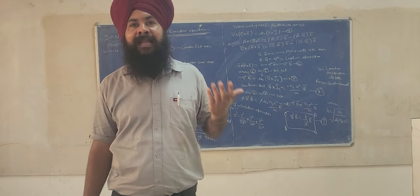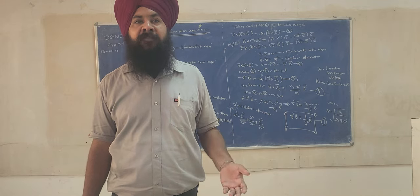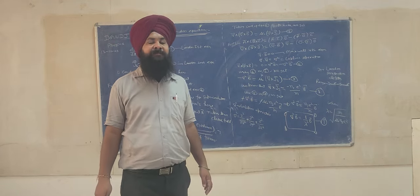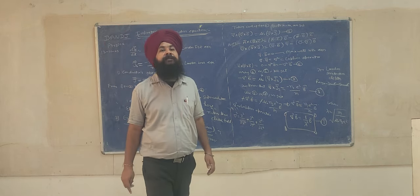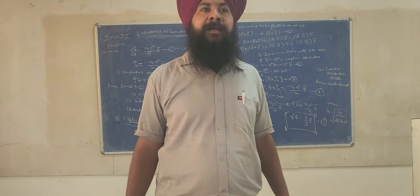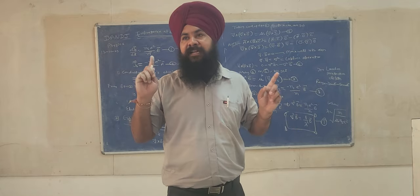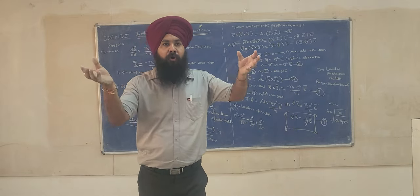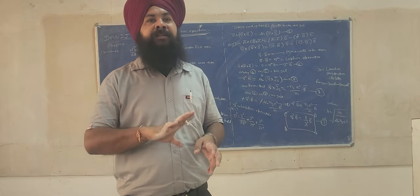How the London equation helps to describe the Meissner effect, which is also called flux expulsion, as well as flux penetration. Flux penetration and flux expulsion are both complementary to each other — in fact, they are opposite to each other.